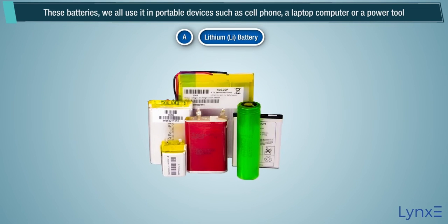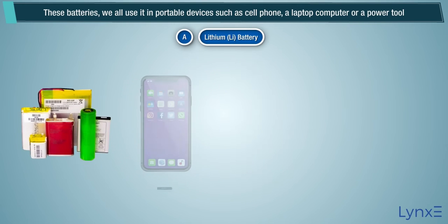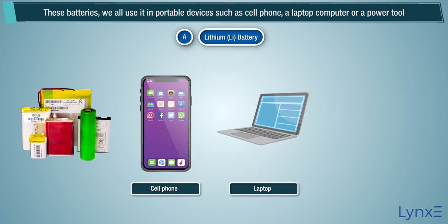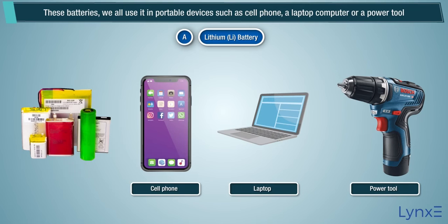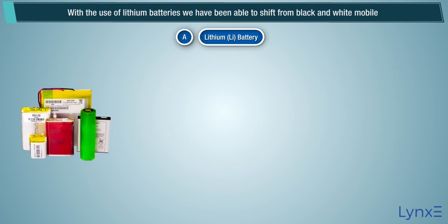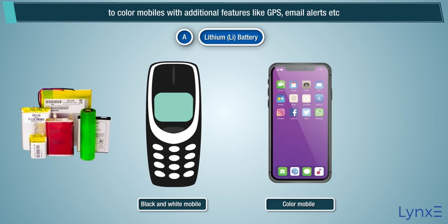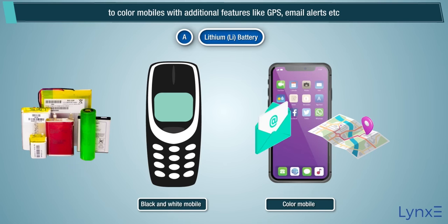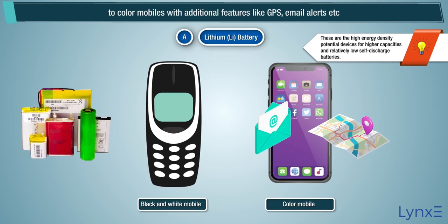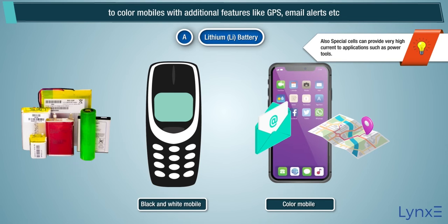Lithium batteries. These batteries are used in portable devices such as cell phones, laptop computers, and power tools. With the use of lithium batteries, we have been able to shift from black-and-white mobiles to colored mobiles with additional features like GPS and email alerts. Note: these are high energy density devices for higher capacities and relatively low self-discharge. Special cells can also provide very high current to applications such as power tools.